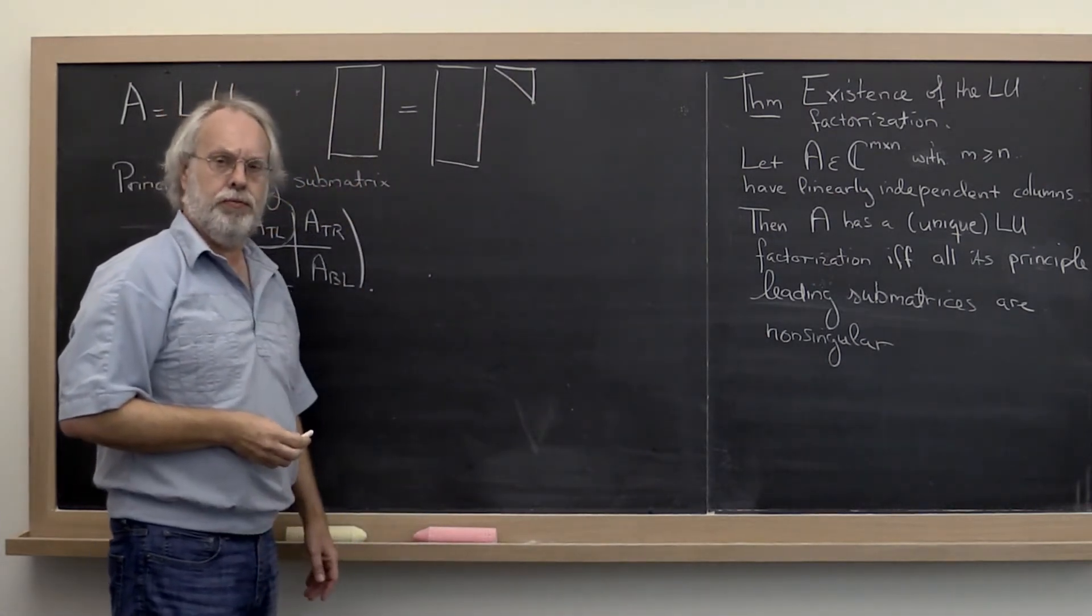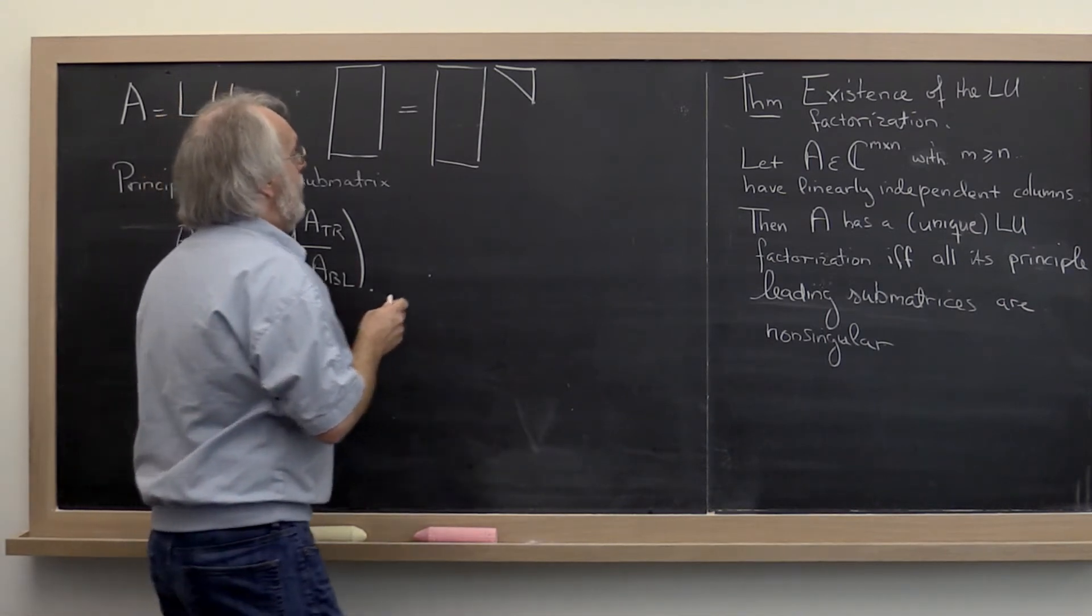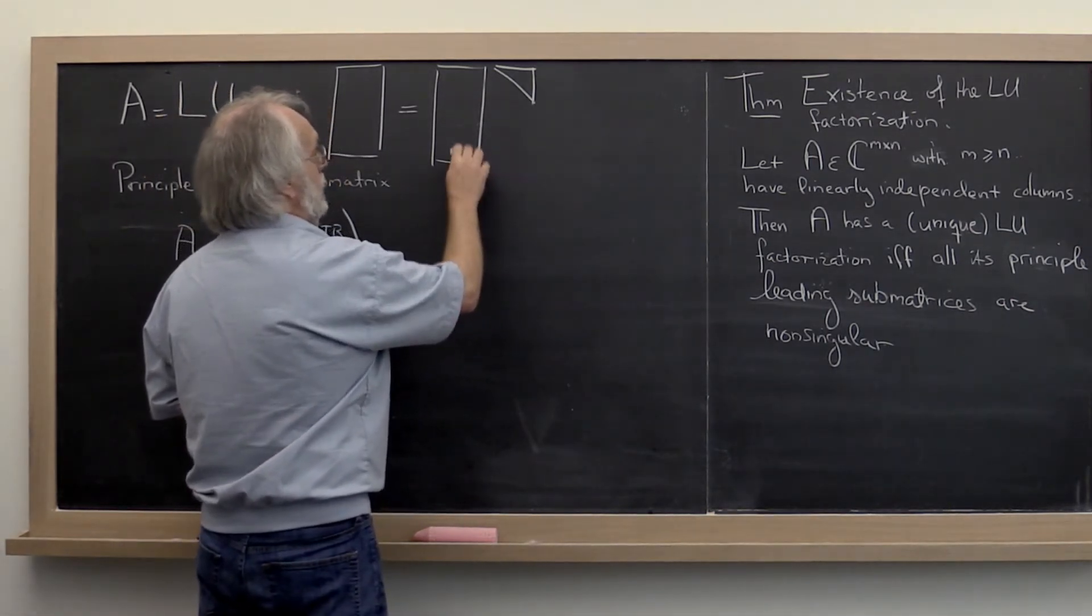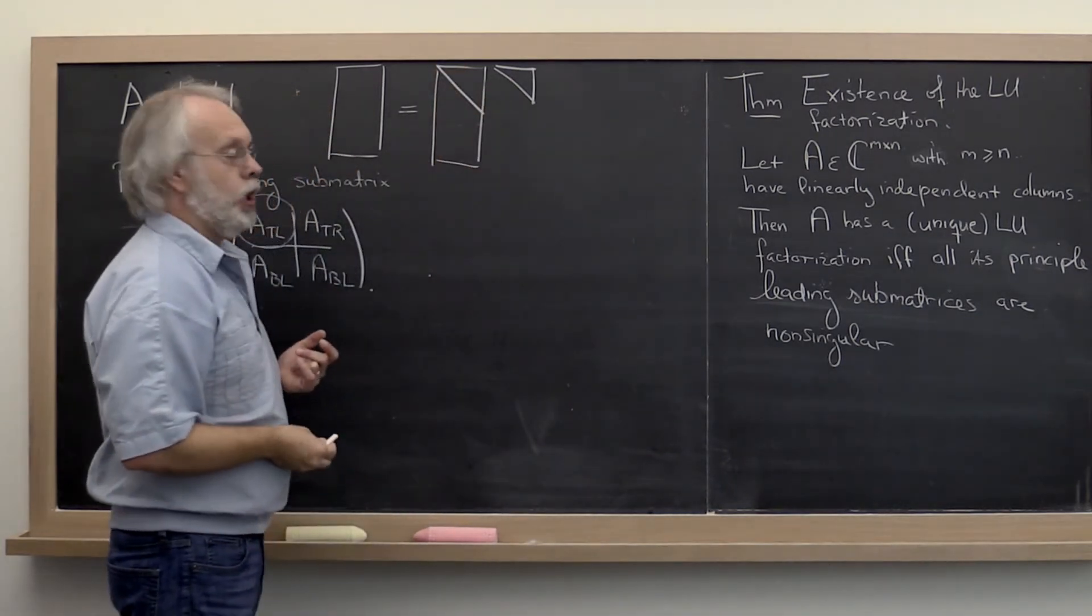Hey, where have we seen that before? We've seen that when we did the QR factorization. And then this particular matrix is actually, we probably should call it lower trapezoidal.